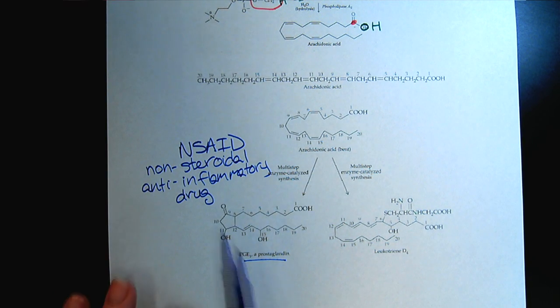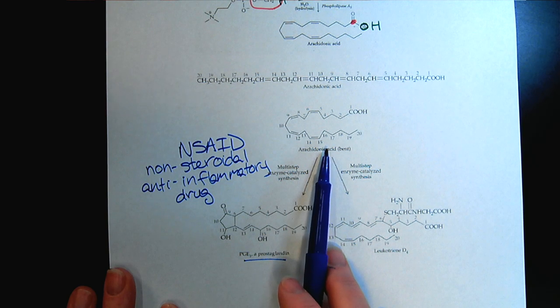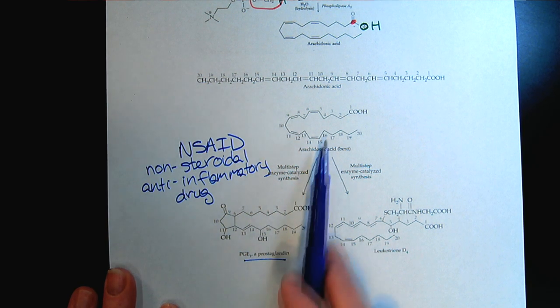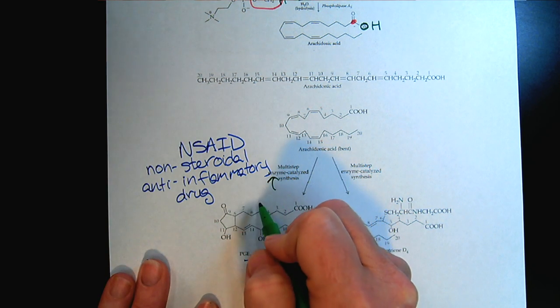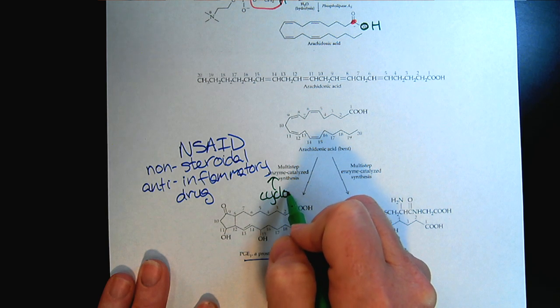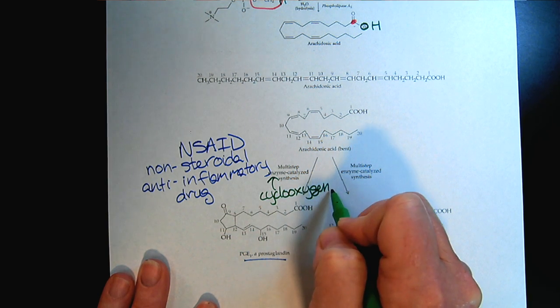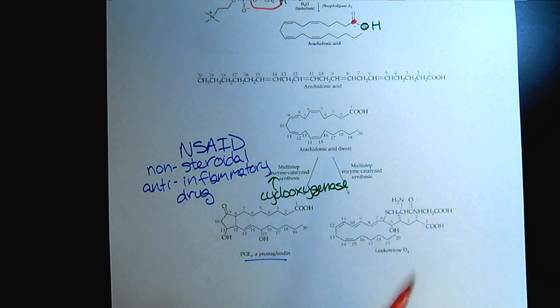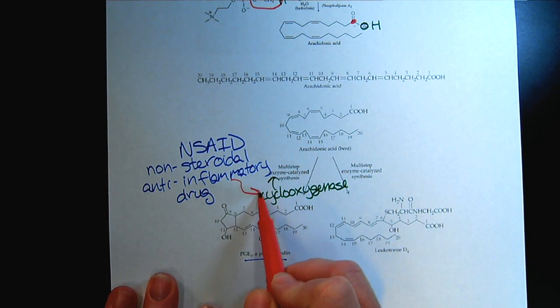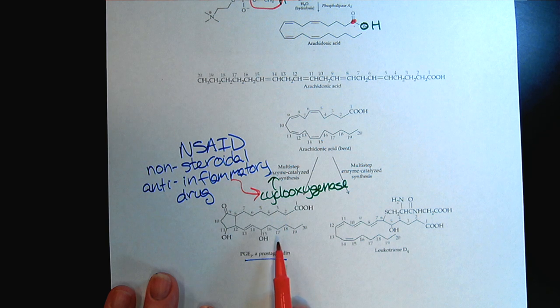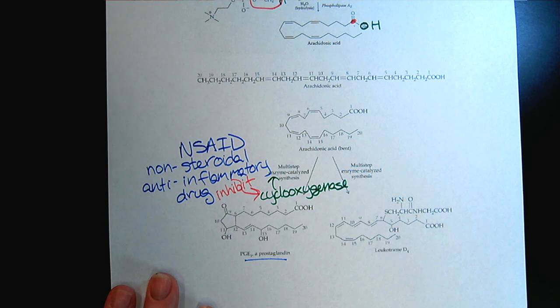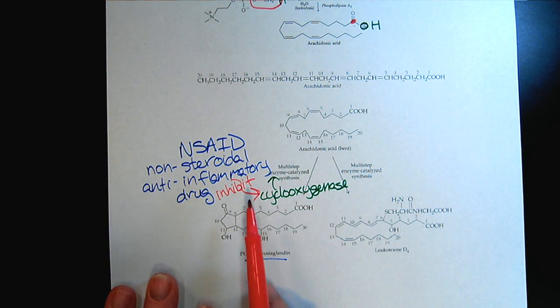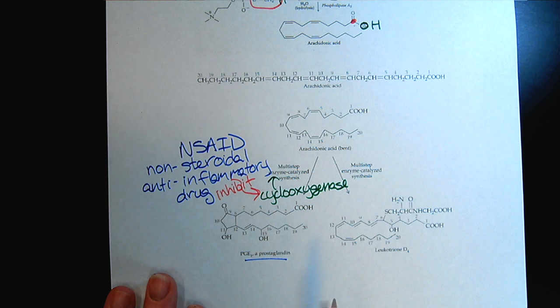The way they work is that there are several enzyme-catalyzed steps that must occur. One of those enzymes is cyclooxygenase. These non-steroidal anti-inflammatory drugs inhibit this enzyme and prevent the formation of prostaglandins. Back in our protein and enzyme chapter, we looked at inhibition. Here's an example where we have the inhibition of an enzyme to prevent the compound that triggers inflammation.